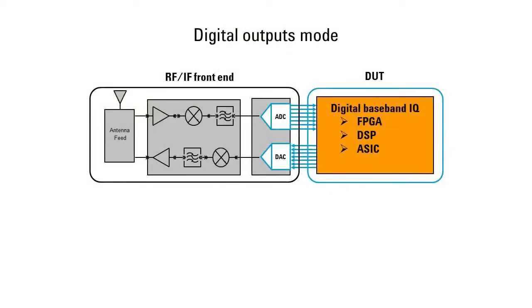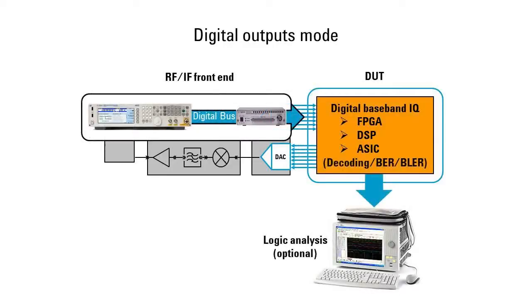Here's a block diagram of your device. We're going to substitute the receiver chain with the MXG and the digital signal interface module to stream the digital IQ directly into your FPGA. Inside your FPGA, you can perform BER analysis or you can look at the decoded bits through your logic analyzer. Let's configure this setup.